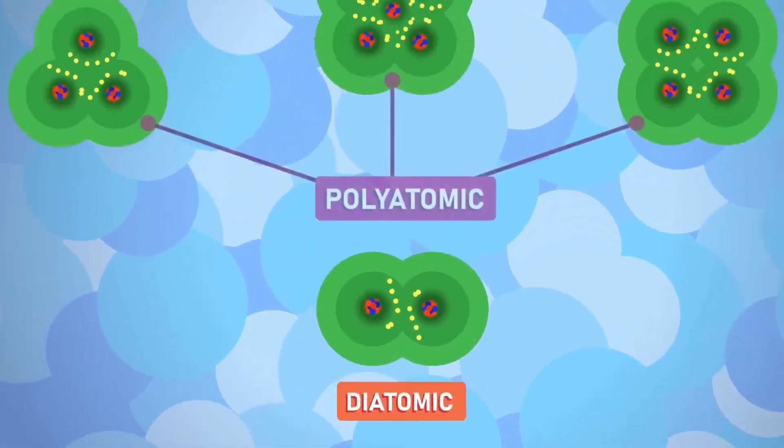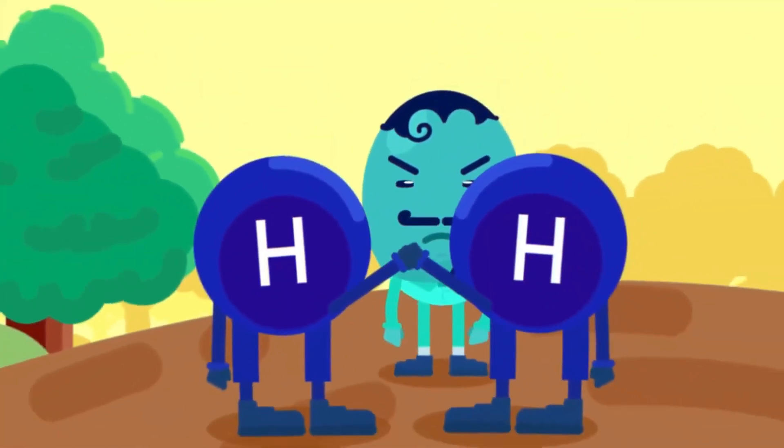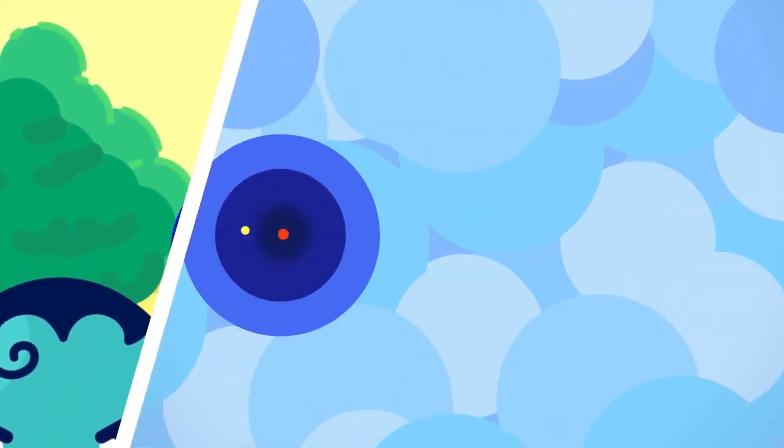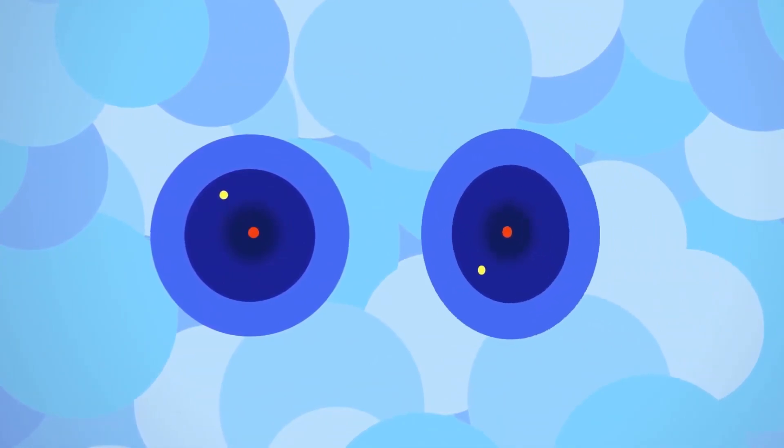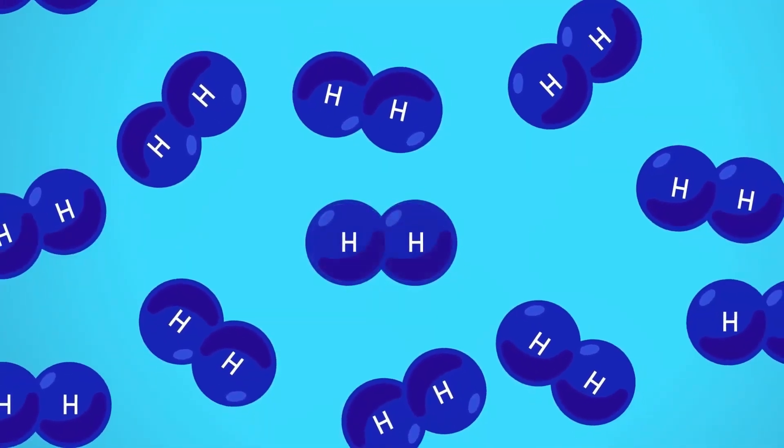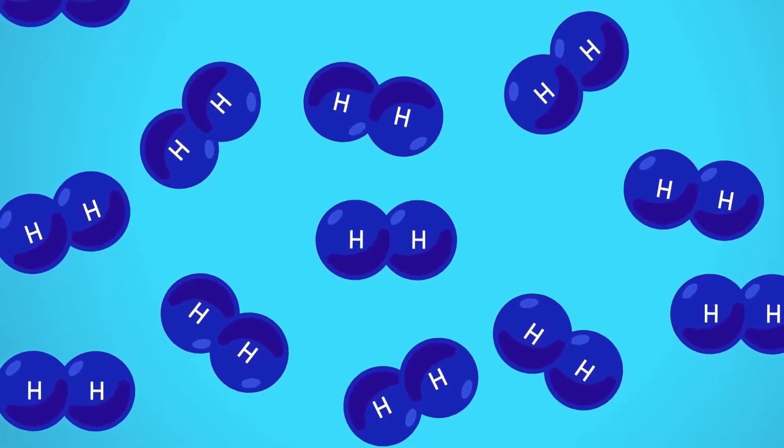Molecules can be diatomic or polyatomic. Diatomic meaning that the molecules are formed by the combination of two atoms. For example, a hydrogen molecule is formed by two hydrogen atoms chemically combined. This is how the hydrogen molecule is found in nature, and can be denoted as H2.